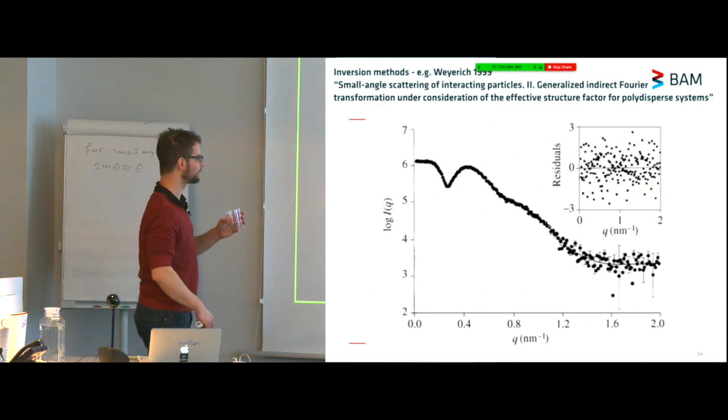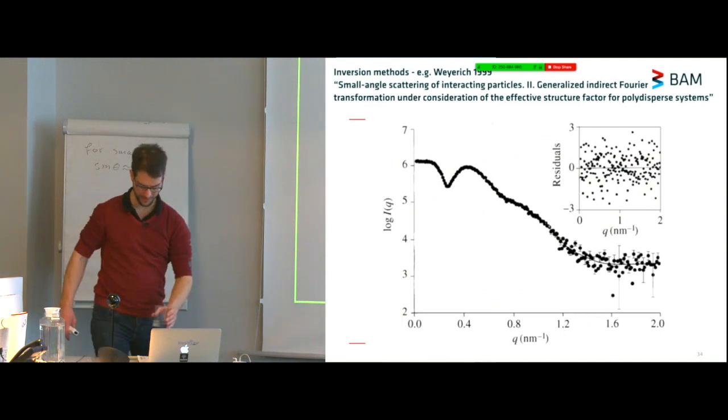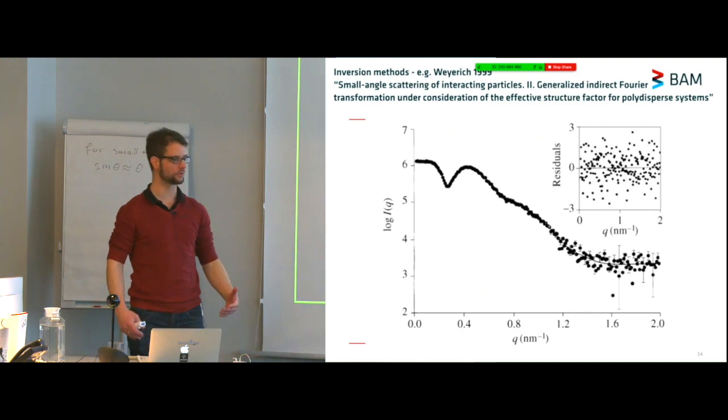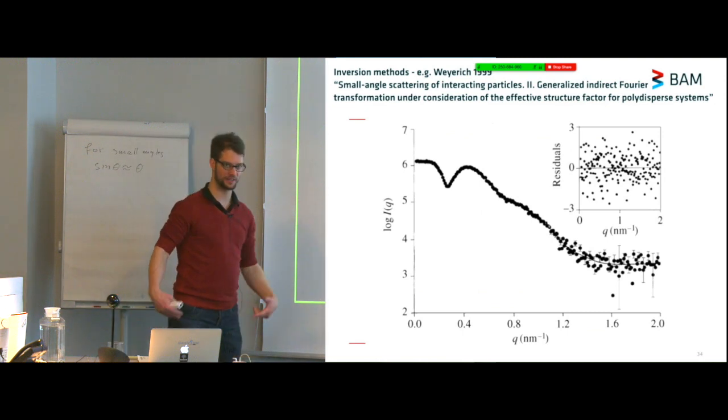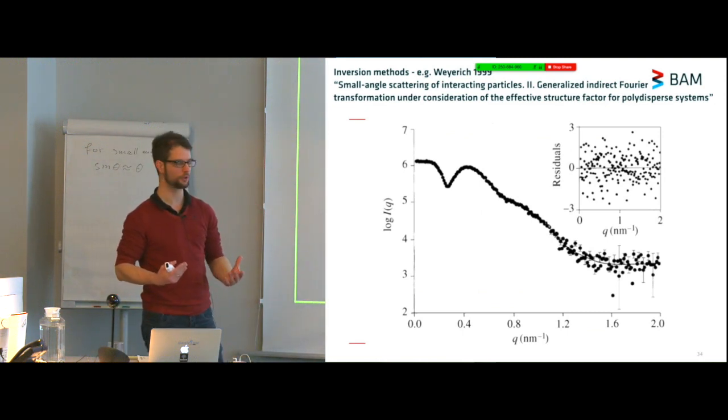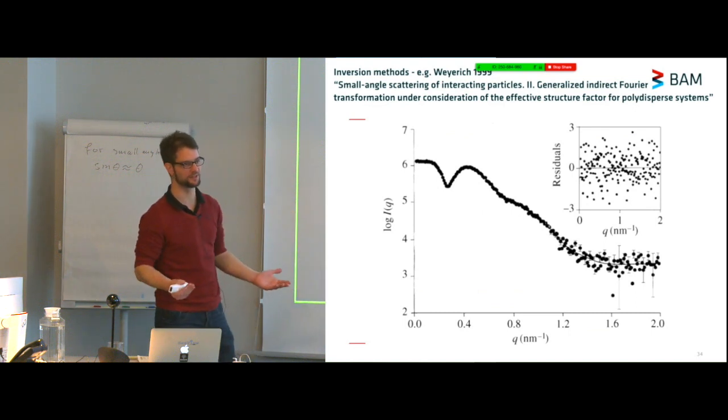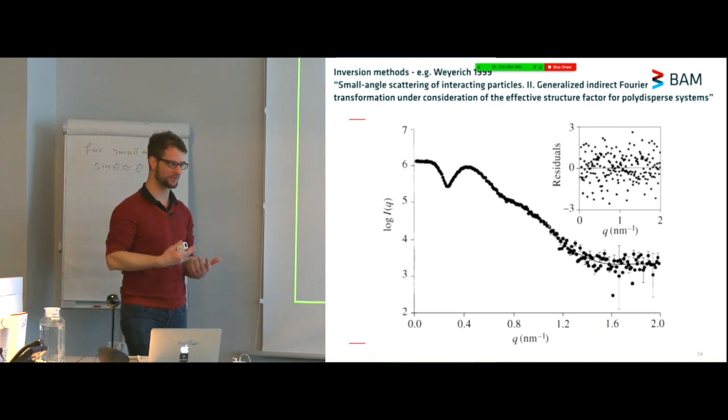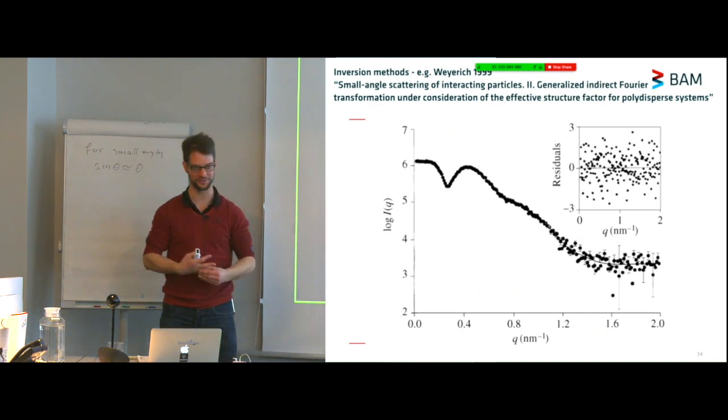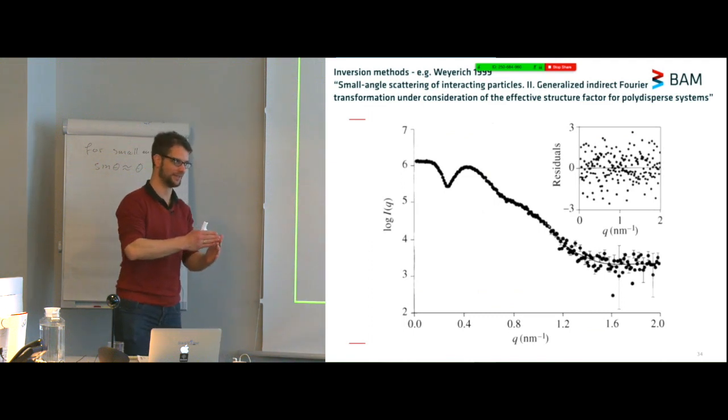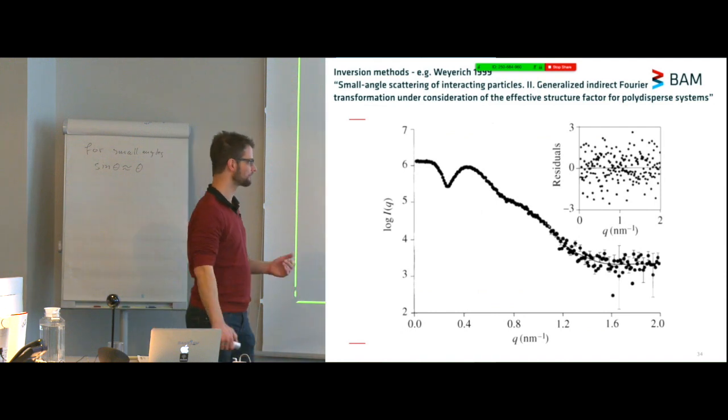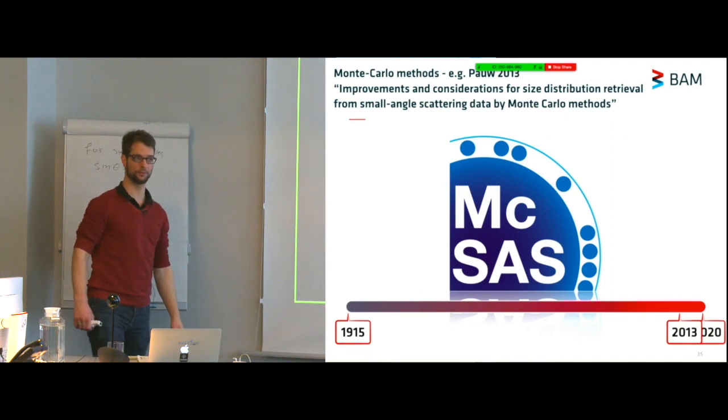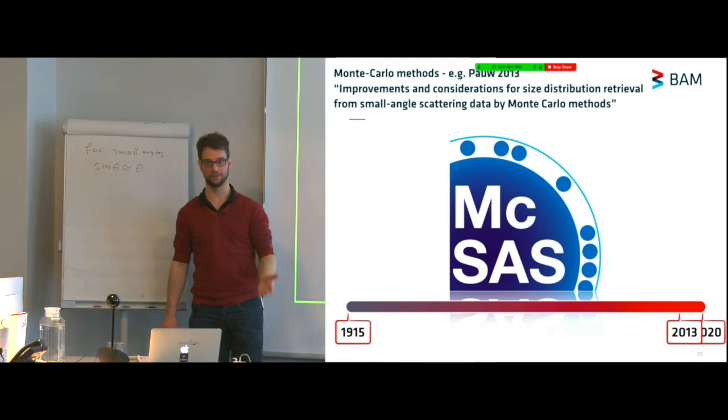Inversion methods were also still being developed. In 1999, we have the generalized inverse Fourier transform, which again inverts your data, gives you a size distribution, but as before still contains a couple of adjustable parameters which people might understand, but I don't understand, okay? There's a smoothness parameter. You're also supposed to stop the iterations for this inversion process after a particular number of times. There's no real strict criterion about when you're supposed to do this. We also came up in 2013 with our own method, McSAS. It's a Monte Carlo way of analyzing your data. It seems to work quite well. We'll talk about it more later.